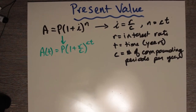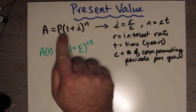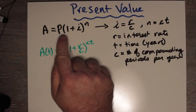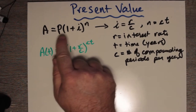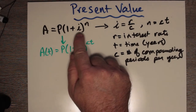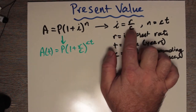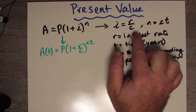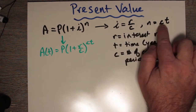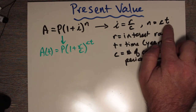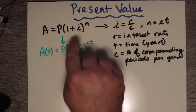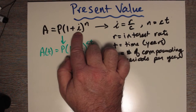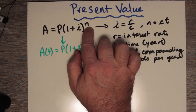Welcome to this discussion on present value. Present value depends on the compound interest formula. In the textbook it's given where i requires a calculation of the interest rate divided by the number of compounding periods per year, and n is the number of compounding periods per year multiplied by the time in years. So i is the interest rate per compounding period, and n is the number of compounding periods all the way to maturity.